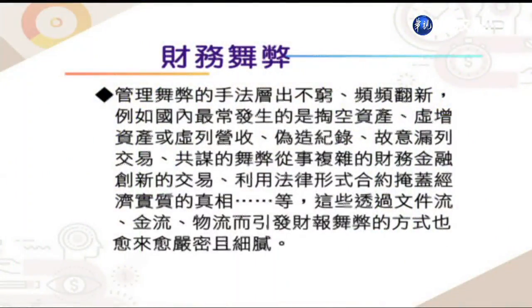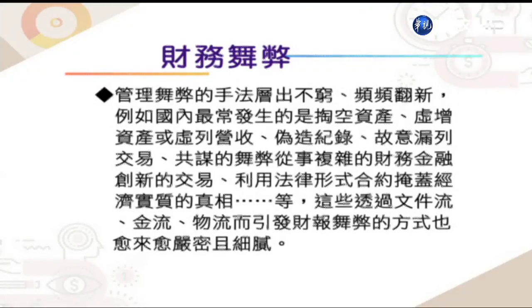财务舞弊的手法层出不穷，频频翻新。例如国内最常见的掏空资产、虚增资产或虚列营收、伪造记录、故意漏列交易、共谋舞弊，从事复杂的财务金融创新交易，利用法律形式合约掩盖经济实质真相。透过文件流、金流、物流引发财务报表舞弊的方式，也越来越严密细腻。